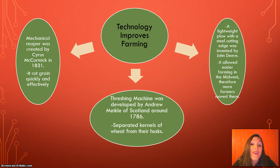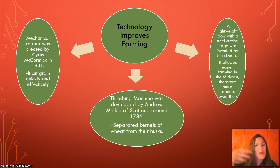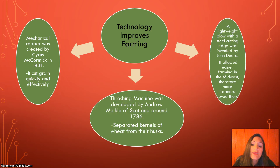Technology also improved farming. A lightweight plow with a steel cutting edge was invented by John Deere, allowing easier farming in the Midwest and encouraging more farmers to move there — before this, they used cast iron and the ground would stick to the plow. The threshing machine was developed by Andrew Meikle of Scotland around 1786 and separated kernels of wheat from their husks. The mechanical reaper was created by Cyrus McCormick in 1831 and cut grain quickly and effectively.